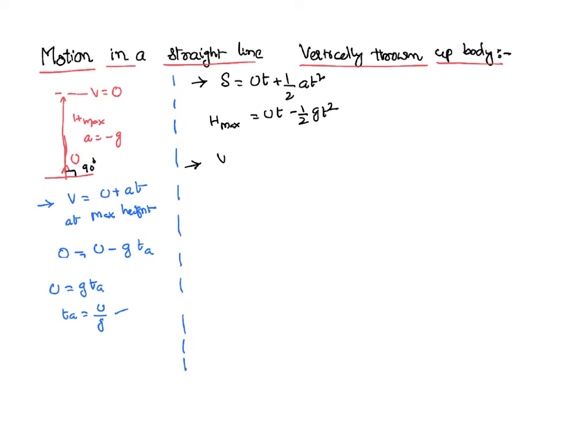Let us write the third equation of motion. v square minus u square equal to 2as at maximum height. Final velocity is 0. a equal to minus g. And s is nothing but h maximum. So, u is nothing but equal to root 2g h maximum. In the vertically thrown body case, you got u equal to root 2gh.